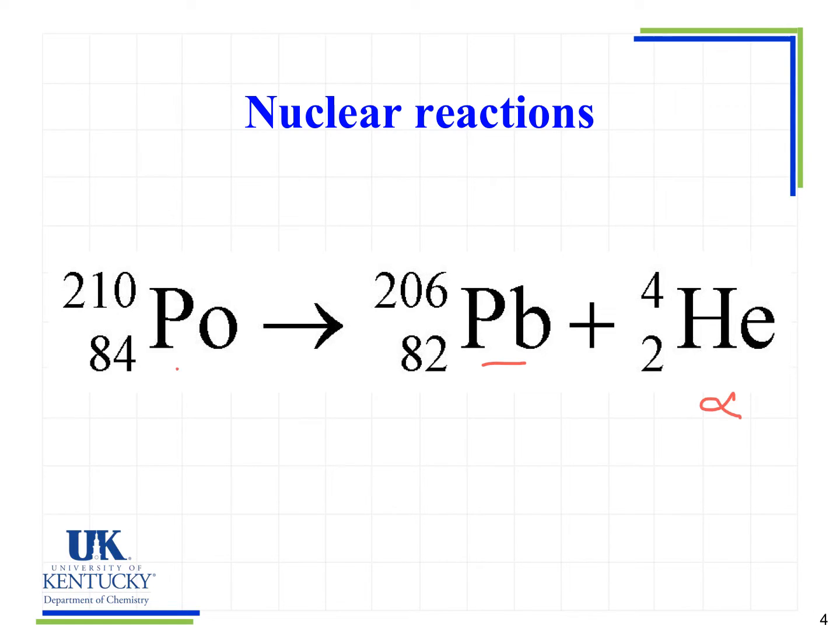And so what we see when we look at our nuclear reaction is that we have 210 equals 206 plus 4. So we see that the sum of the mass numbers on either side of the equations is equal. And in the atomic numbers we see something similar. We see 84 equals 82 plus 2.